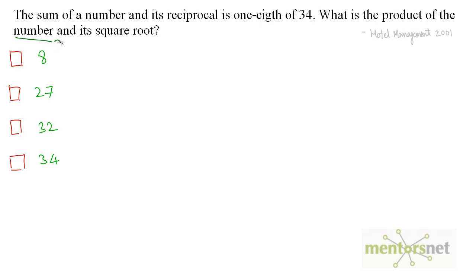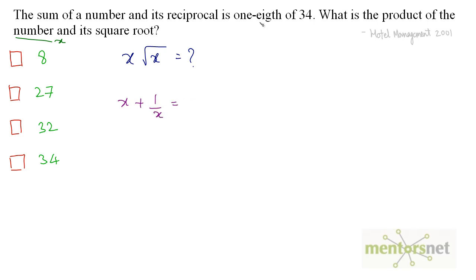Let the number be x. We have been asked the product of the number and its square root. Let's analyze what has been given to us. The sum of that number and its reciprocal: x plus 1 by x is equal to 1 eighth of 34, which is 1 by 8 of 34.